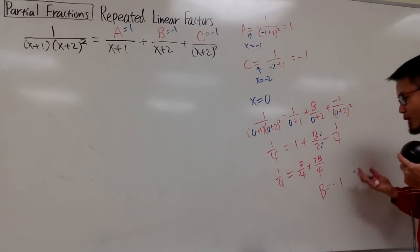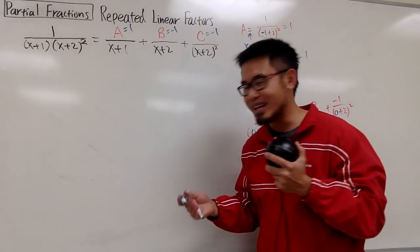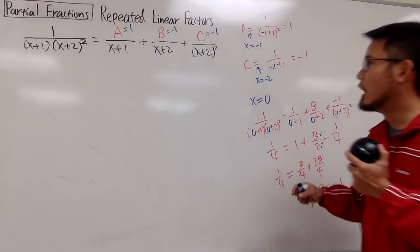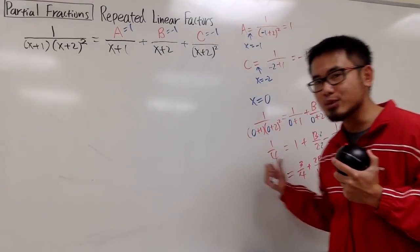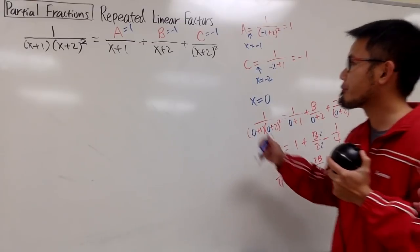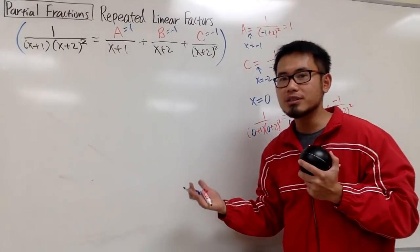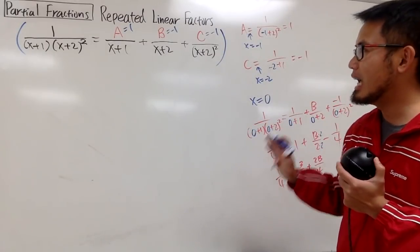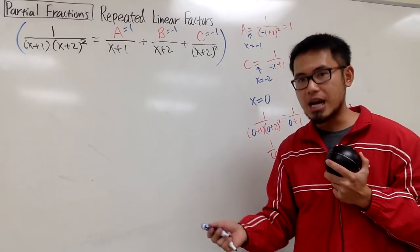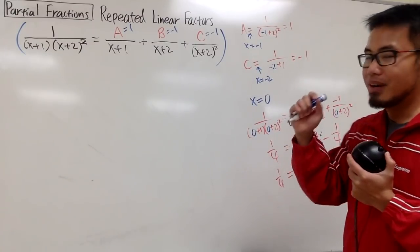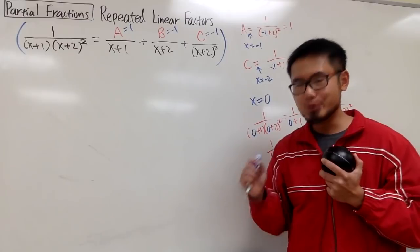This is how the partial fractions with cover-up method work. This is the quickest way. Well, I will explain why this works. This is how. Usually, you don't want to deal with an equation with a bunch of fractions, so what we can do is just multiply everything by the lowest common denominator. But that's kind of bizarre. If you have linear factors, do the following.